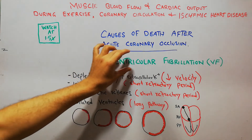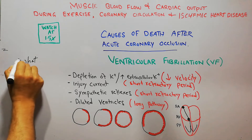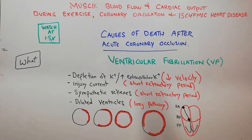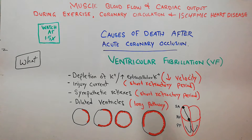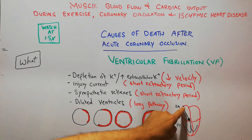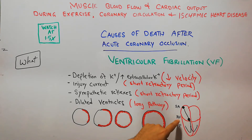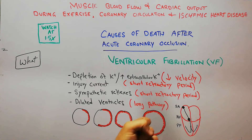What is ventricular fibrillation? To understand VF, we must understand the normal impulse conduction pathway in the heart. Normally, there is impulse generation in the SA node, which gets conducted to the AV node and then through the Purkinje fibers into the heart muscles. The heart muscles are excited, the heart contracts, and then after contraction the impulse dies out.